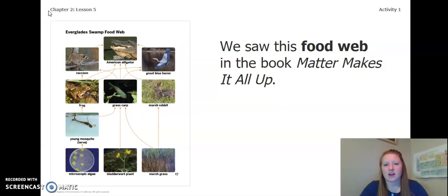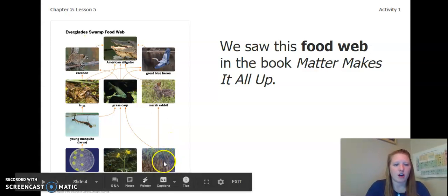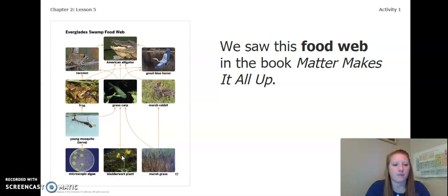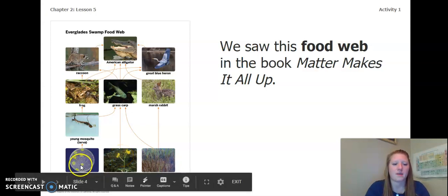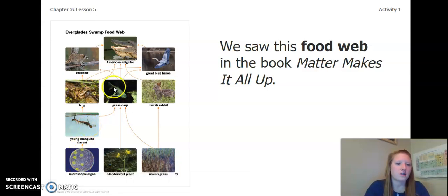When we read Matter Makes It All Up, we saw this food web. It is an Everglades swamp food web. So you can see at the bottom, we have marsh grass, bladderwort plant, and microscopic algae. As we move up, we have young mosquito, frogs, grasshopper, carp, marsh rabbit, blue heron, American alligator, and a raccoon.